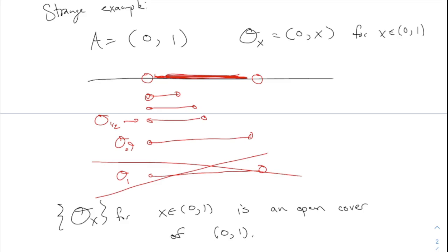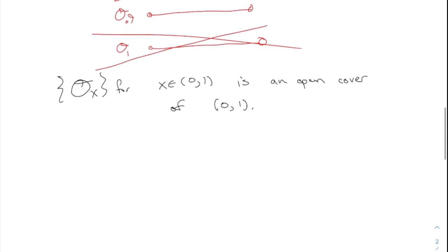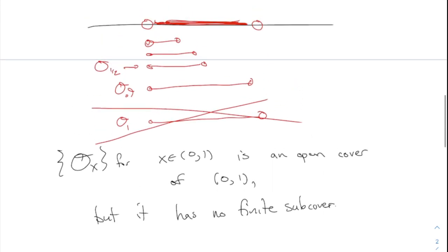Does it have a finite subcover? That is, is it possible to cover the whole thing using only finitely many of those sets? I think the answer is no. If you only use finitely many, my question would be: how far up are you going to go? If you only use up to O-0.9, then you didn't cover the whole thing. If you only use finitely many, there's a biggest one among them, and it's not going to be big enough to cover the whole thing. So this is an open cover of (0,1) but it has no finite subcover.